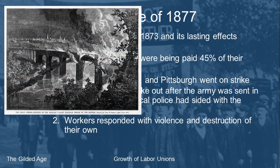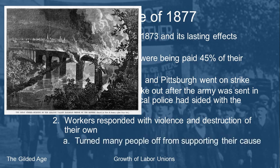There was violence between authorities and workers, but also violence from the workers directed toward businesses. One illustration shows the destruction of the Lebanon Valley Railroad bridge — workers set fire to rail cars and in this case destroyed a bridge the business had built. Because of so much destruction of property, many people were turned off from supporting the union and the strike collapsed. One business owner, Tom Scott, saw his railroad company destroyed because of the Railroad Strike of 1877.